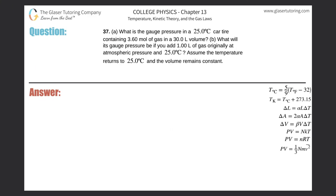Number 37, letter A: What is the gauge pressure in a 25 degree Celsius car tire containing 3.6 moles of gas in a 30 liter volume? It sounds like an ideal gas law problem to me.